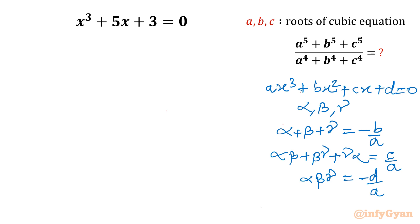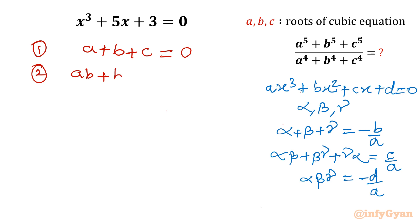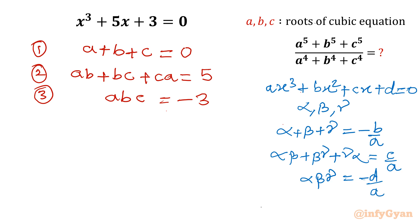So let us apply here. We write a + b + c — the sum of roots — as 0, since the coefficient of x² is 0. Equation two: ab + bc + ca equals c/a, where c is 5 and a is 1, so it equals 5. Equation three: the product of roots a·b·c equals -d/a, where d is 3, so it is -3.